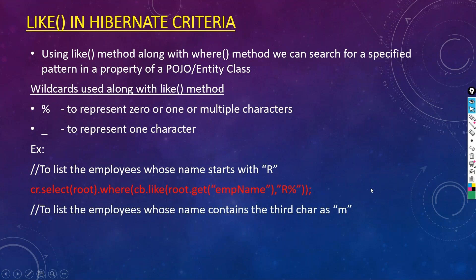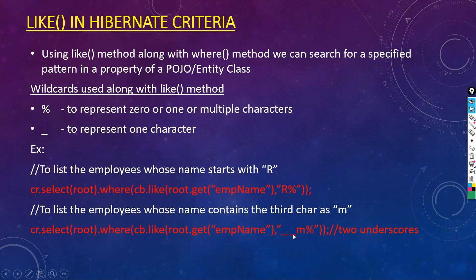For another example, to list employees whose name has M as the third character: cb.like(root.get("empName"), "_ _M%"). Two underscores mean the first two characters can be anything, the third character must be M, and percent allows any characters after that.